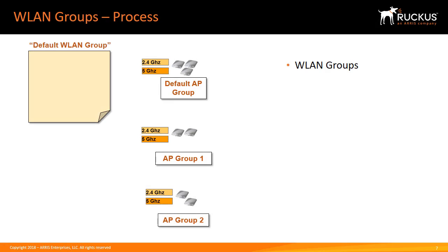The process of creating wireless LAN groups is similar to that of access point groups. However, unlike access points which can only belong to a single group, wireless LANs can be a member of more than one wireless LAN group.